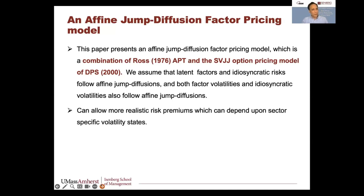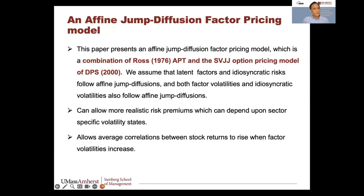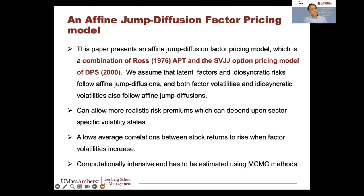That model can allow realistic risk premiums that depend upon sector-specific volatility states — a dot-com sector or other sectors going through local bubbles with their own risk premiums. Average correlations could increase when factor volatilities increase. It's computationally intensive and we've not yet estimated the model, but we believe MCMC methods will help us do that.